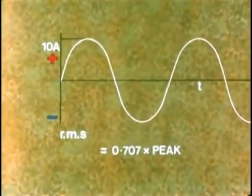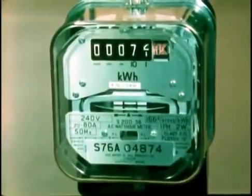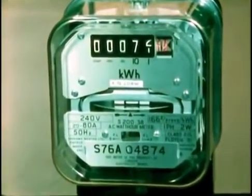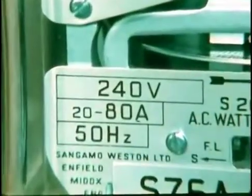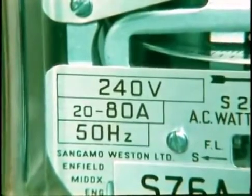When alternating currents or voltage are specified, it's always the RMS value. For example, the household voltage of 240 volts is the RMS value. The peak voltage is in fact nearly 340 volts.